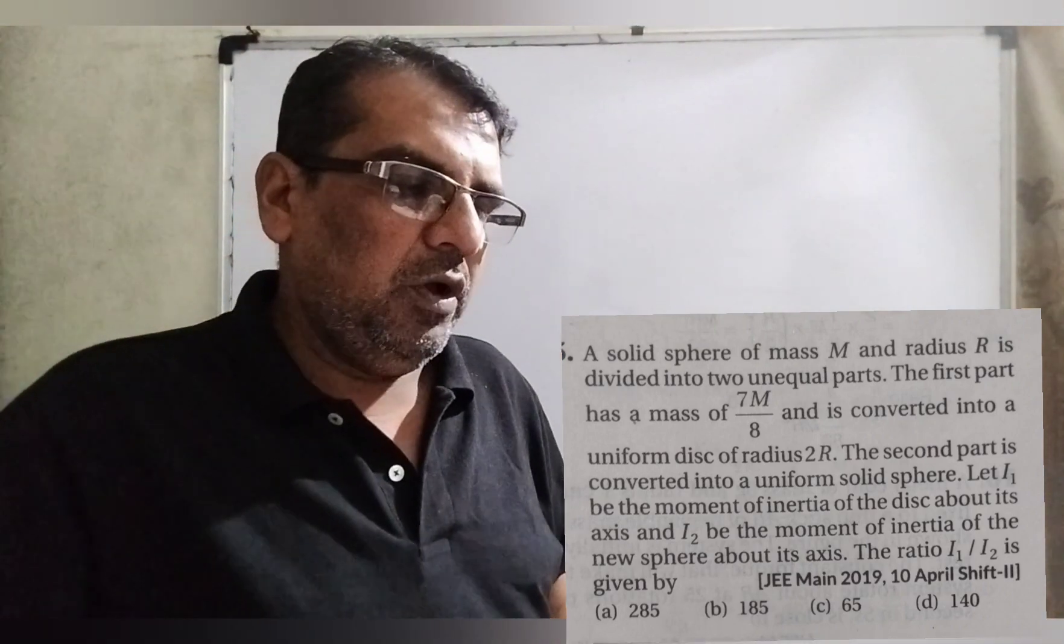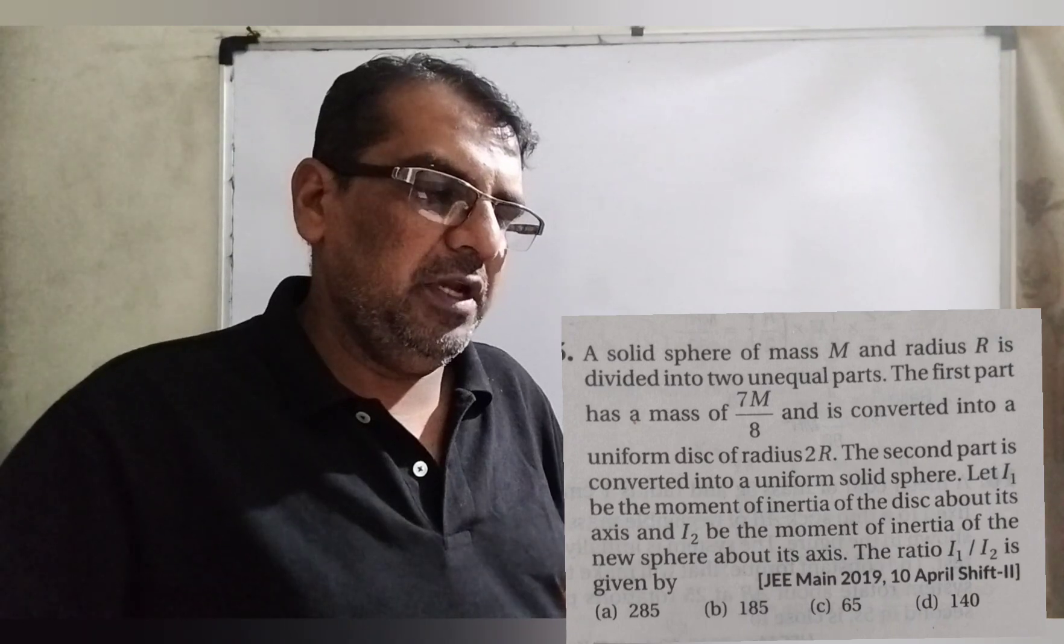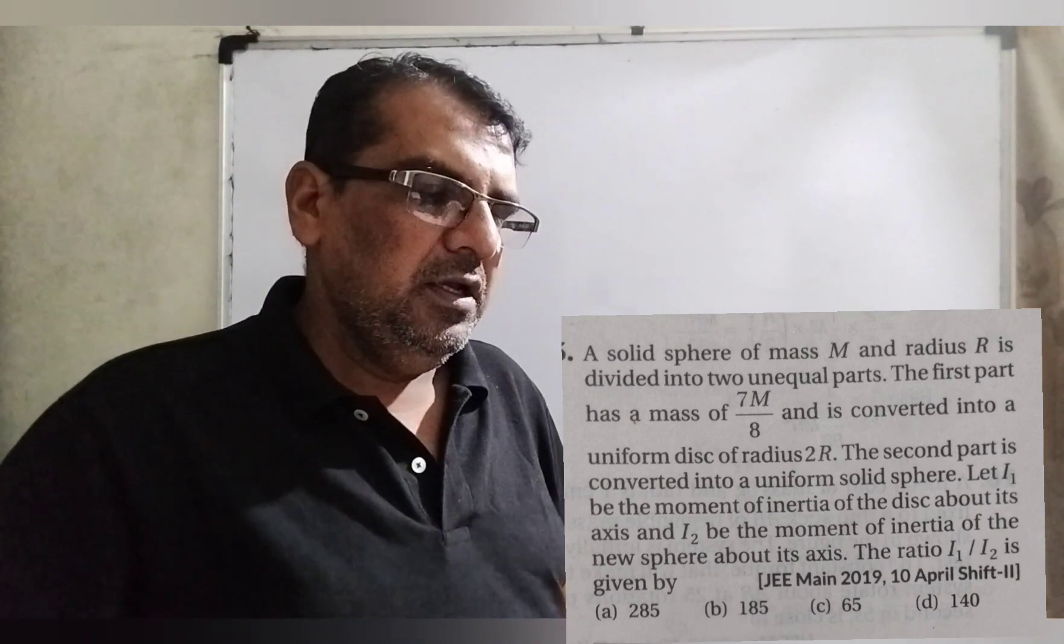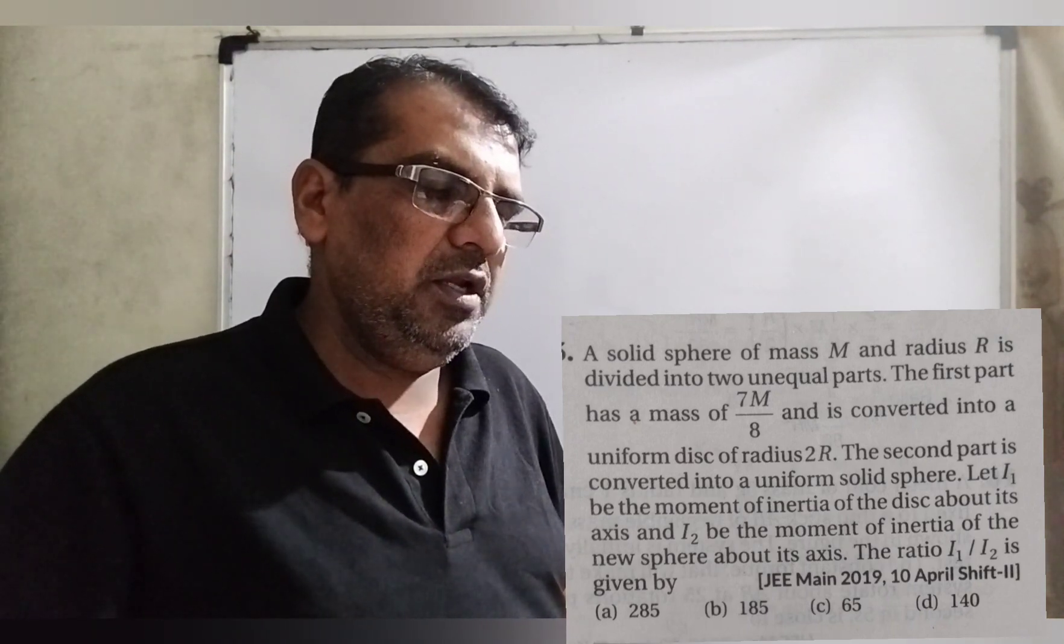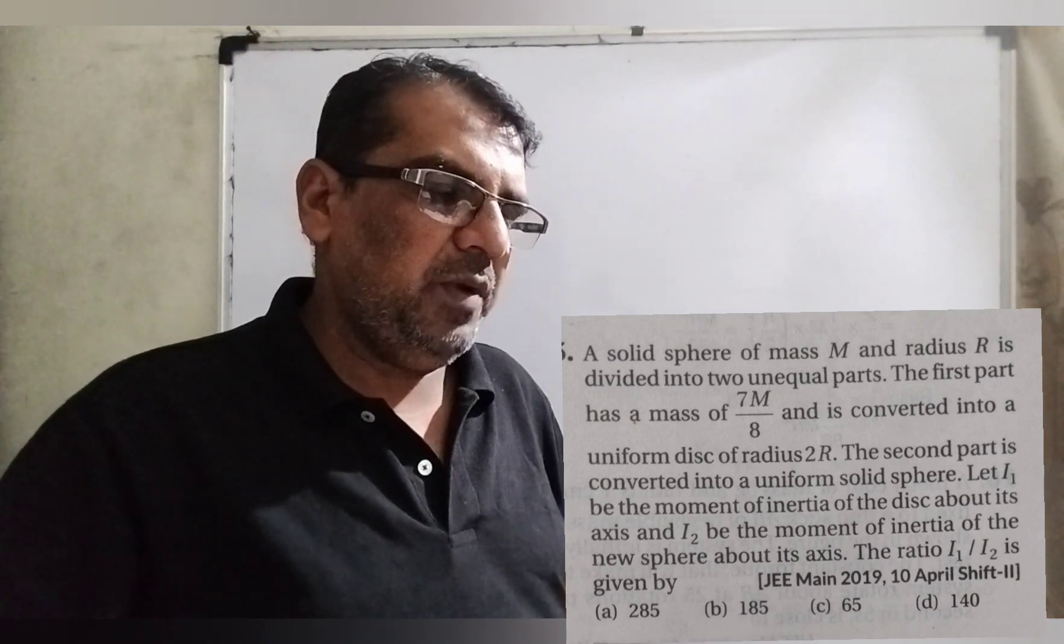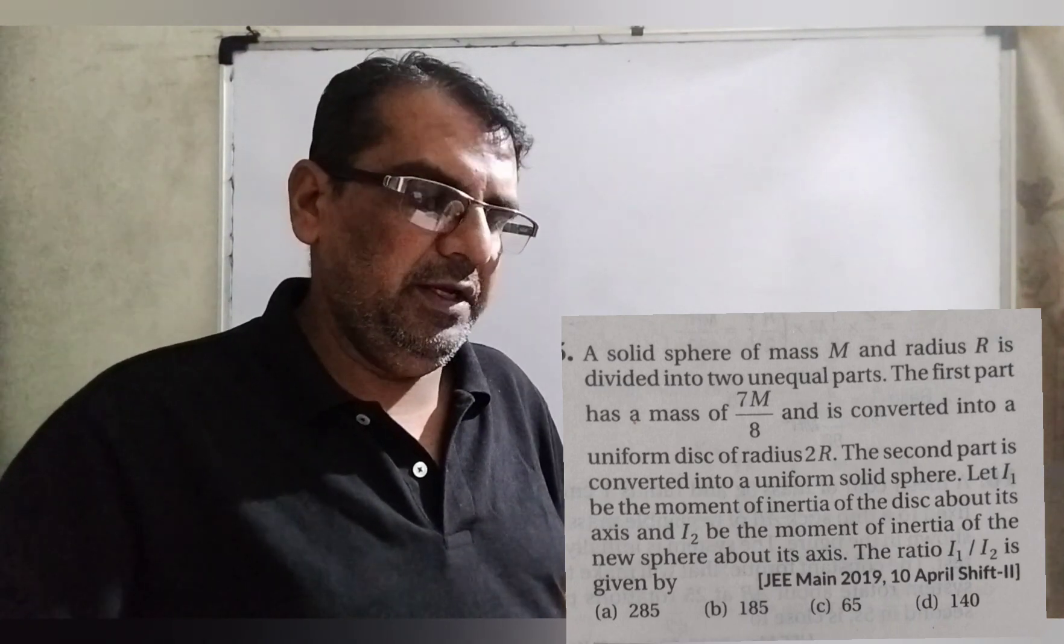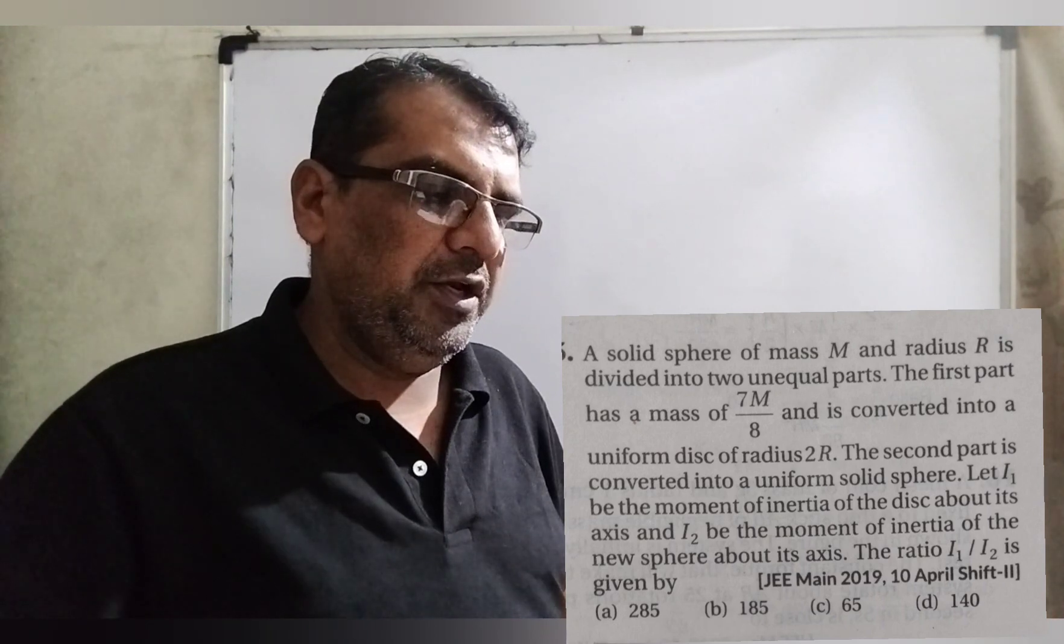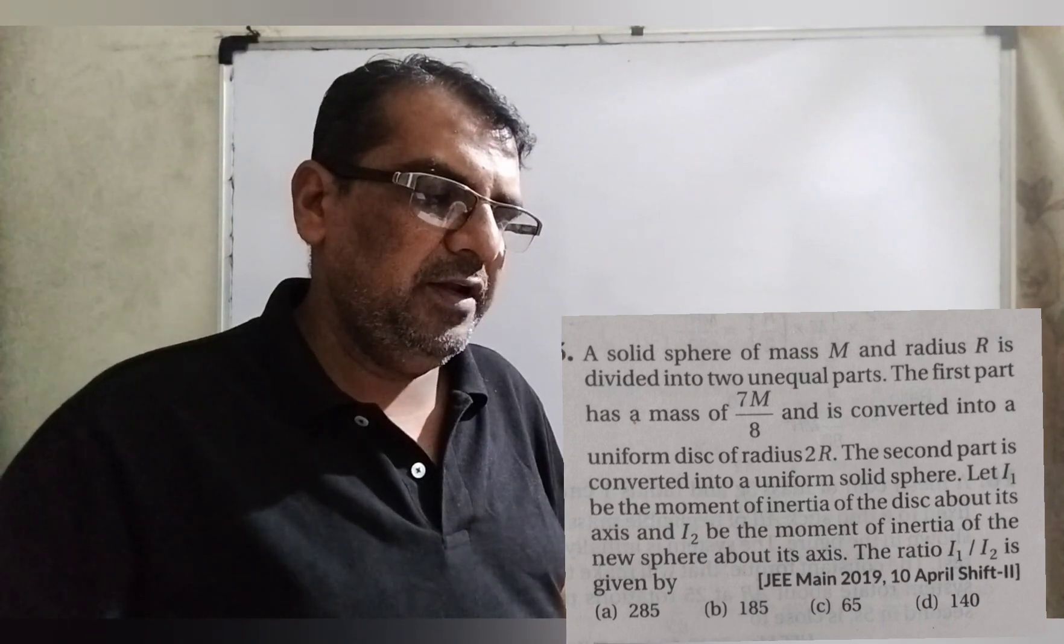What the question says? A solid sphere of mass capital M and radius capital R is divided into two unequal parts. The first part has a mass of 7M/8 and is converted into a uniform disk of radius 2R.